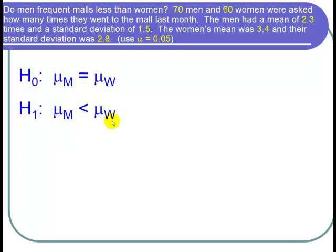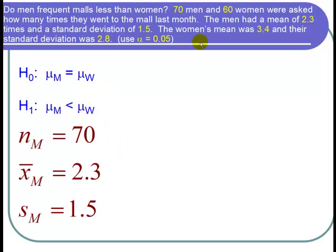So now let's get the cast of characters for the men. There were 70 men surveyed, so n sub m is 70. The mean for the men was 2.3, so x bar sub m is 2.3. And the men's standard deviation for these 70 men was 1.5. And since it's these 70 men, it's a sample standard deviation, not a population standard deviation. So s sub m equals 1.5.